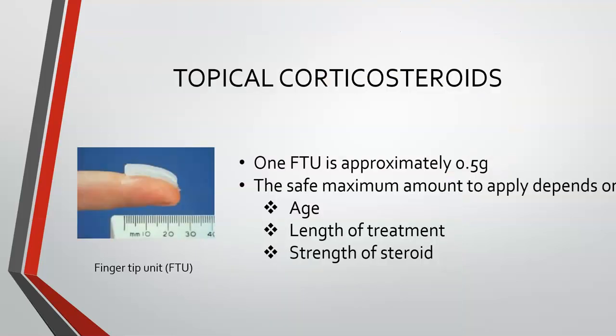There is a very unique way to measure all topical medications used for skin application. We use the fingertip unit, which measures the distance from the tip of your finger to the distal interphalangeal joint of your index finger. That is equivalent to approximately 0.5 gram. For topical corticosteroids, the most important thing to remember is that the safe maximum amount to apply depends on the age of the patient, the length of treatment, and the strength — whether mildly potent or very potent.